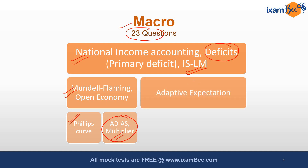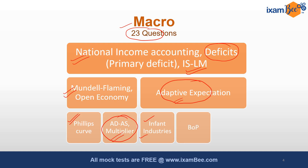A question from adaptive expectations was there. There was also an infant industry argument question, a theoretical question related to BOP, and a question from money supply — specifically what are the factors leading to a decline in money supply. Besides that, there were numericals from national income accounting and calculation of the multiplier.